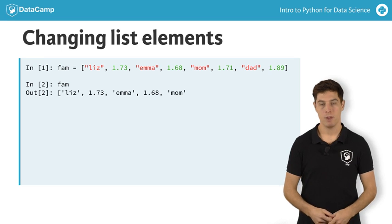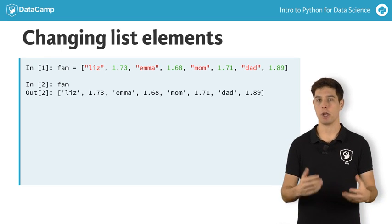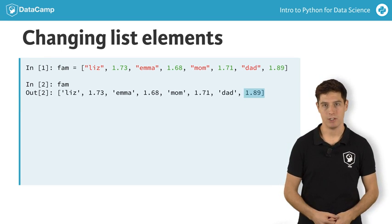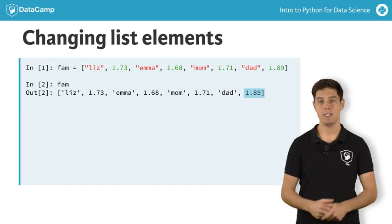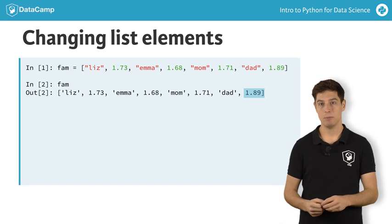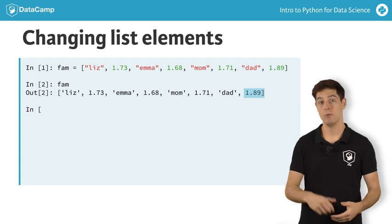Suppose that after another look at fam, you realize that your dad's height is not up to date anymore, as he is shrinking with age. Instead of 1.89 meters, it should be 1.86. To change this list element, which is at index 7, you can use this line of code.